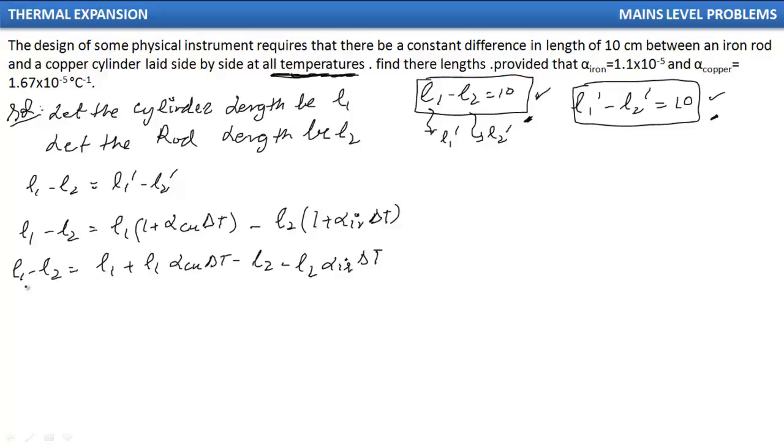Here we see that L1 minus L2 factor on both sides cancels out. When I simplify, I get L2 alpha iron delta T equals L1 alpha copper delta T. Delta T cancels again, so I get alpha iron × L2 equals L1 × alpha copper.